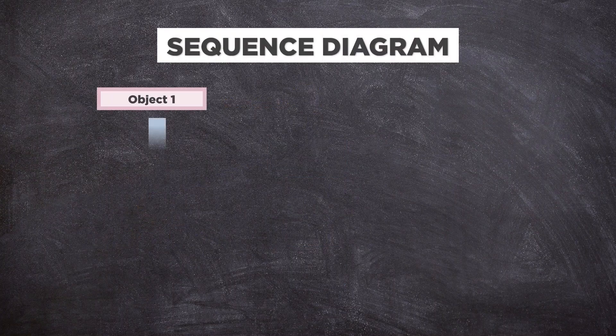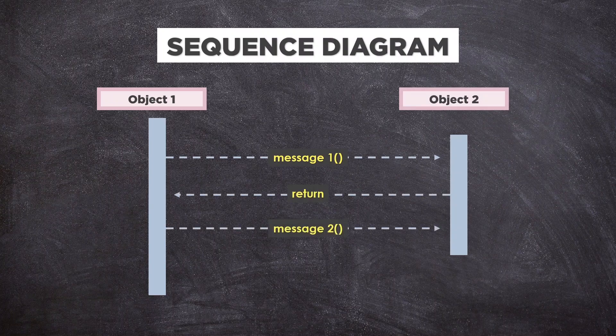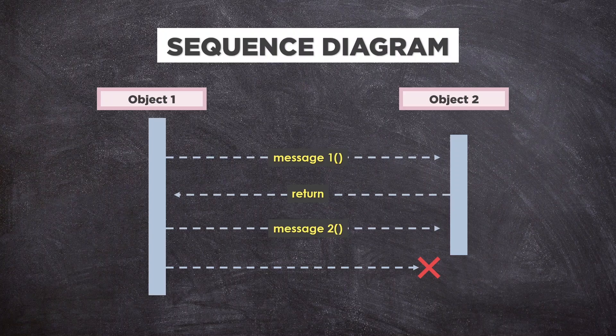Sequence diagrams. In UML, sequence diagrams show how objects interact with each other and the order in which those interactions occur. It's important to note that they show the interactions for a particular scenario. The processes are represented vertically and interactions are shown as arrows. There are other diagrams available too, but these are the few which are mostly used in the software industry.